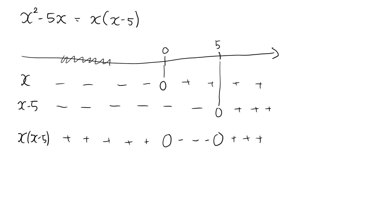From the sign diagram, we can see that, for example, the expression x times x minus 5 is negative when x is between 0 and 5.